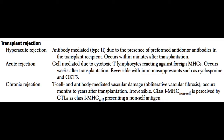Hyperacute rejection is antibody-mediated, meaning it's a type 2 hypersensitivity reaction. This is due to the presence of preformed antibodies against the graft — the patient receiving the organ transplant already has antibodies in their bloodstream against antigens present on the donated organ, and those antibodies are there before the organ is even placed into the new body.